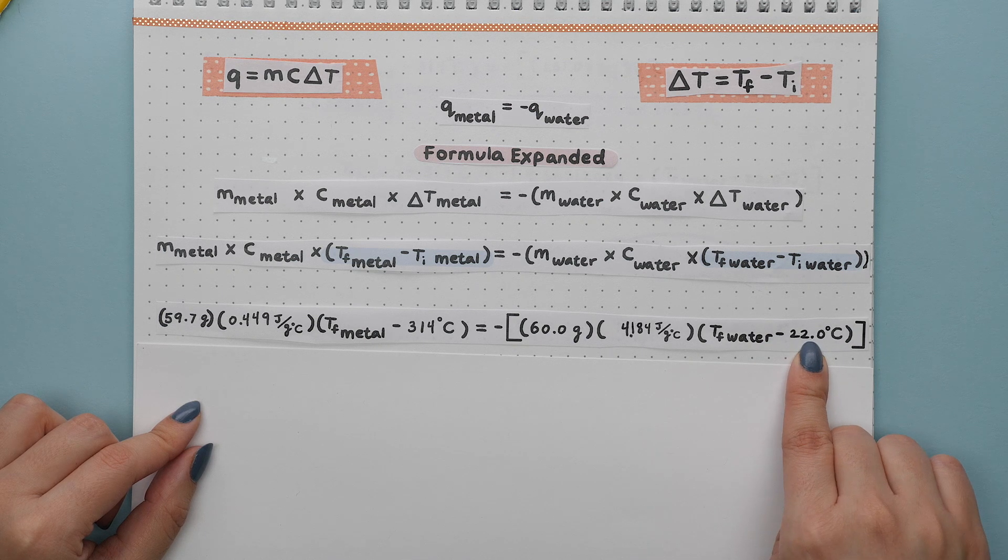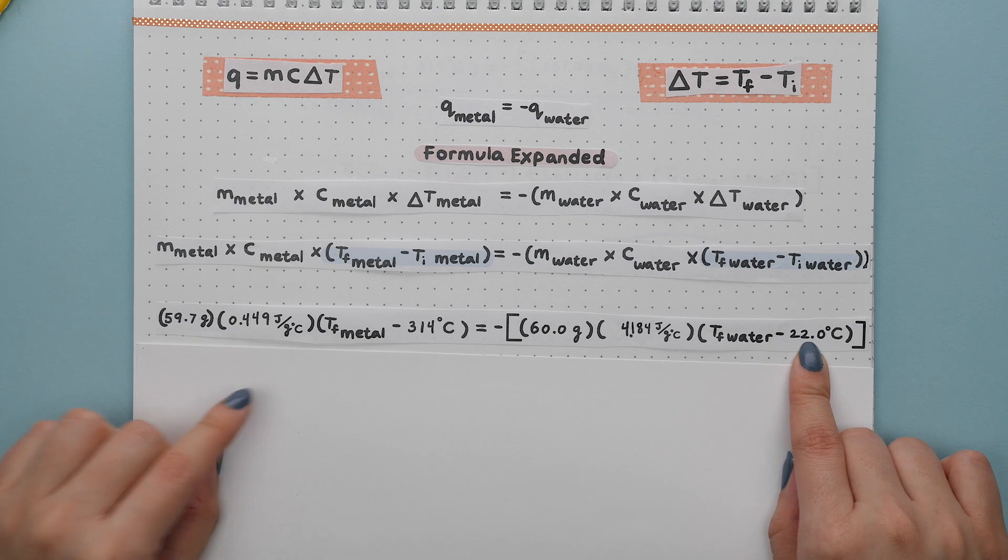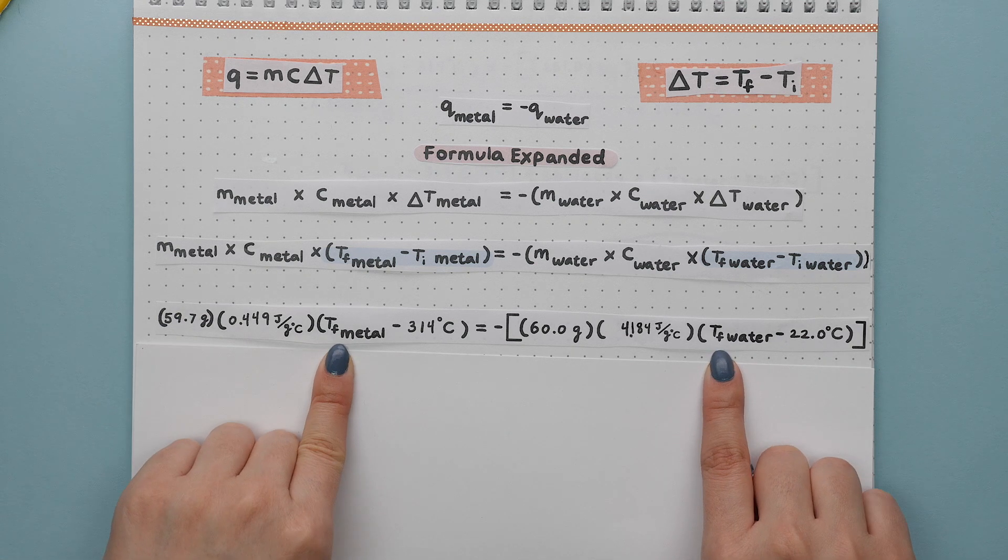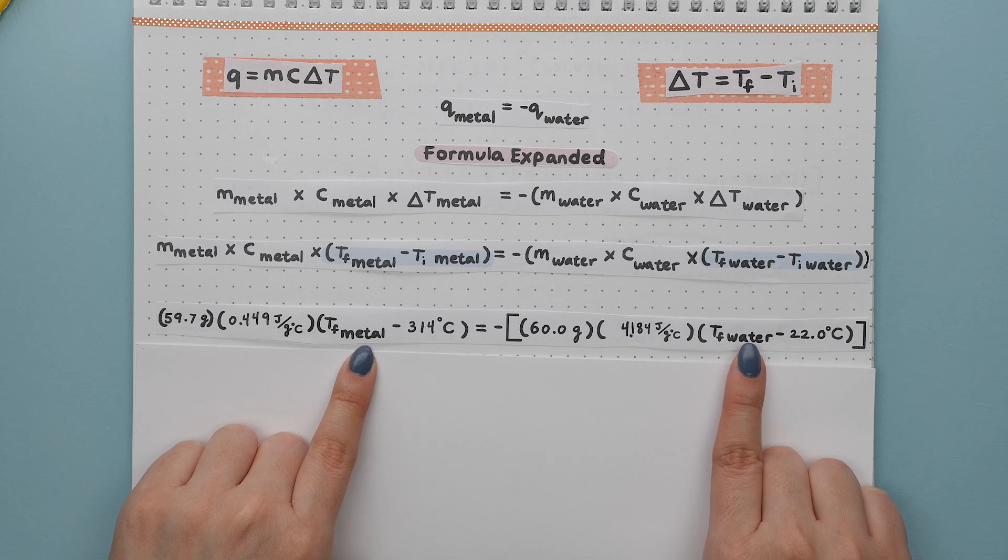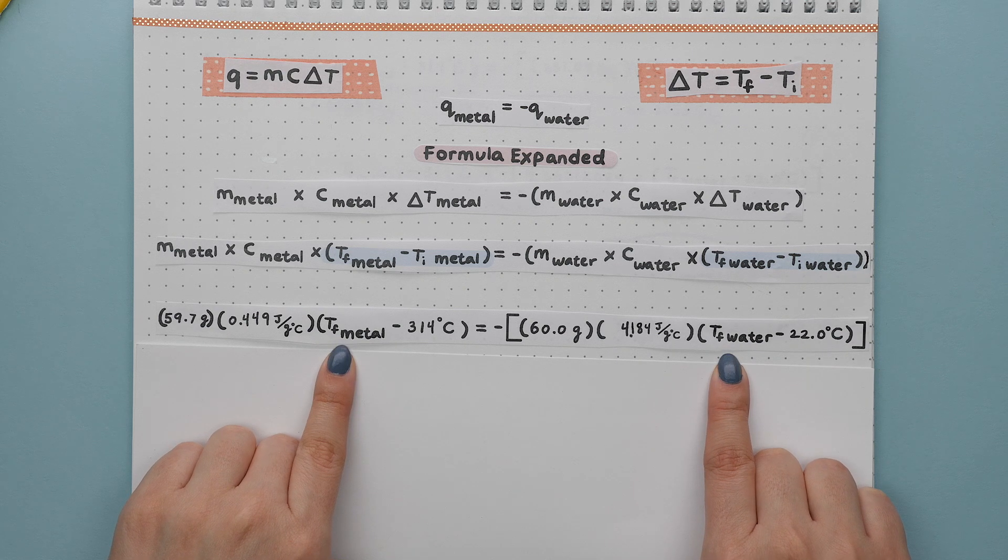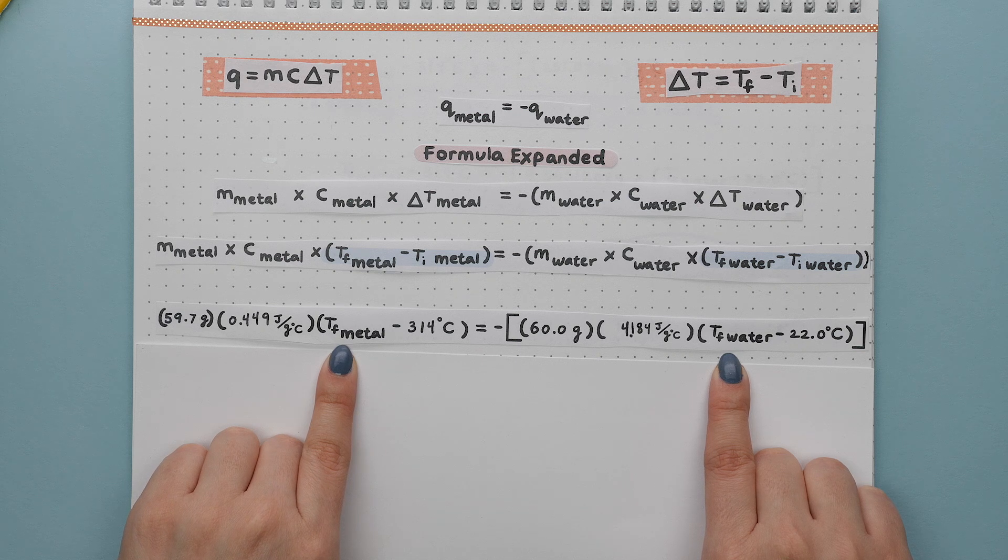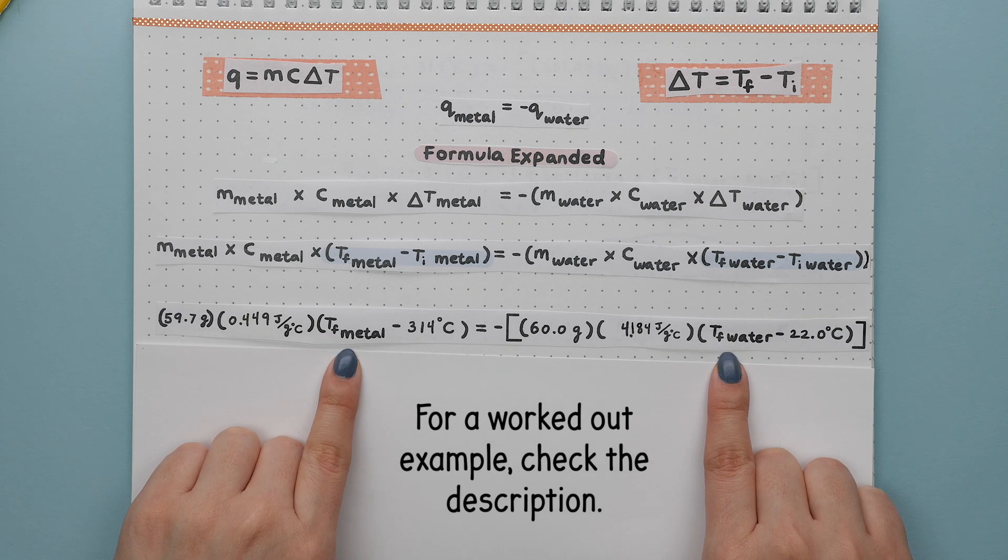Now this appears like we are solving for two unknown variables since each final temperature is for a different element or substance, but since we now know the concept that both final temperatures of the metal and water will be the same, we will end up combining the T finals together.